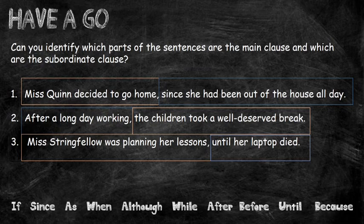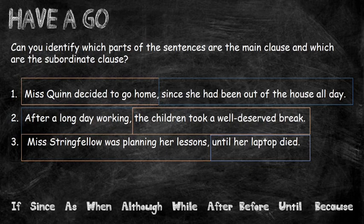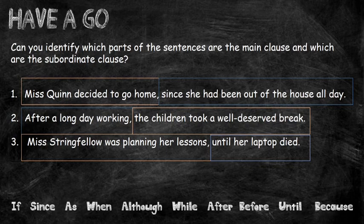Here are the answers. 'Miss Quinn decided to go home' is the main clause, because that makes sense on its own. The additional information is 'since she'd been out of the house all day' — 'since' is the subordinating conjunction, so that is the subordinate clause. In the second sentence: 'After a long day of working, the children took a well-deserved break.' The subordinate clause is at the beginning because the subordinating conjunction is 'after.' 'After a long day working' is the additional information; 'the children took a well-deserved break' is the main clause.